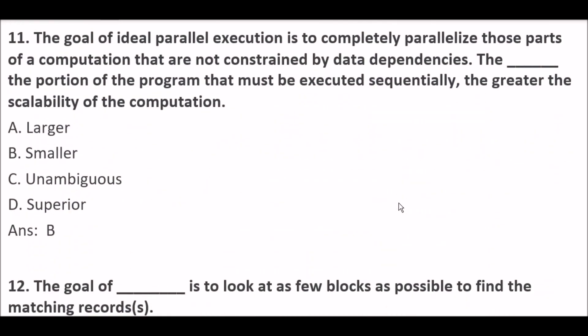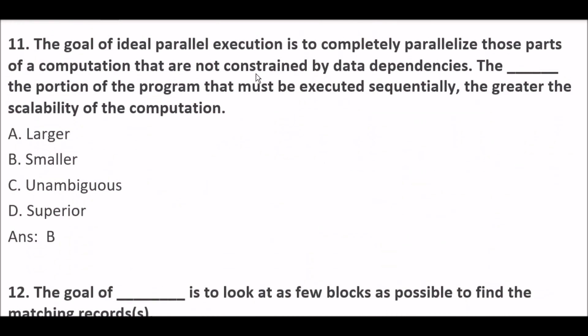Next question. The goal of ideal parallel execution is to completely parallelize those parts of a computation that are not constrained by data dependencies. The blank space — smaller the portion of the program that must be executed sequentially, the greater the scalability of the computation. Option A: Larger. Option B: Smaller. Option C: Unambiguous. Option D: Superior. Right answer is Option B — Smaller.